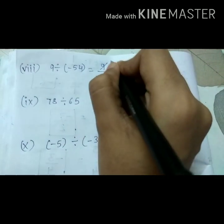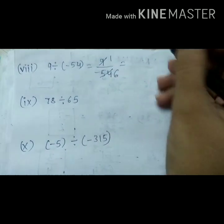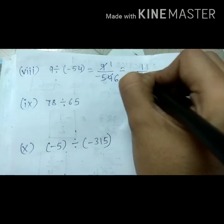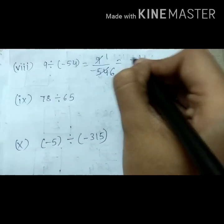We know that 9 and 54 are divisible by 9. 9 ones are 9, 9 sixes are 54. So 1 upon 6. Positive, negative, answer is negative.